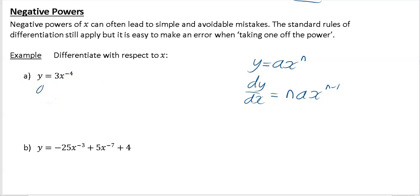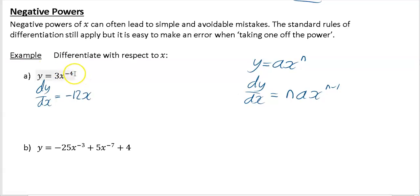So here we're going to differentiate. You multiply by your power: three times minus four gives minus 12, and you reduce your power by one. This is where people make mistakes — reducing minus four by one means minus four minus another one is minus five. That's the part where people will make mistakes.